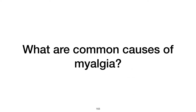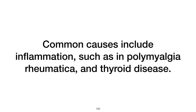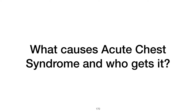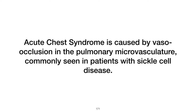What are common causes of myalgia? Common causes of myalgia include inflammation, as seen in polymyalgia rheumatica, and thyroid disease. What causes acute chest syndrome, and who gets it? Acute chest syndrome is caused by vasoocclusion in the pulmonary microvasculature, primarily affecting patients with sickle cell disease.